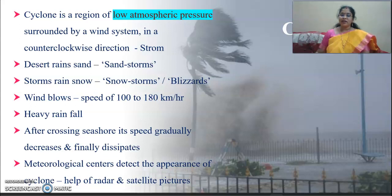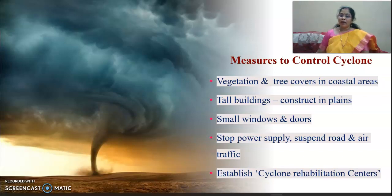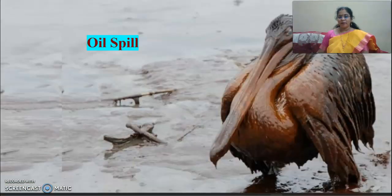After crossing the seashore, a cyclone's speed gradually decreases and it finally disappears. The Meteorological Center detects cyclones using radar and satellite pictures and gives alerts to the public. Measures to control cyclone impact include planting more trees in coastal areas, constructing tall buildings with small windows, closing doors and windows, stopping power supply, suspending road and rail traffic, and establishing cyclone rehabilitation centers.